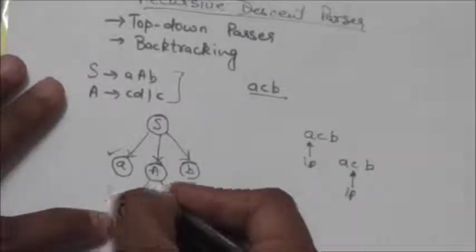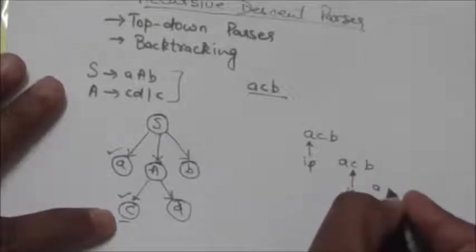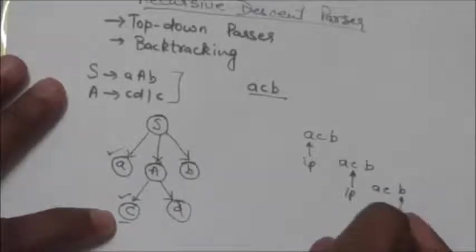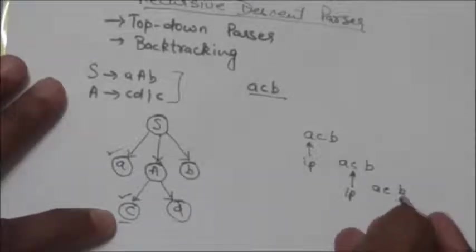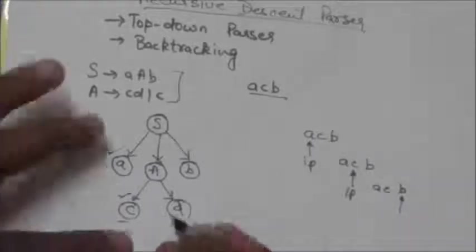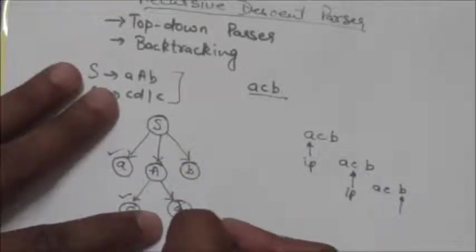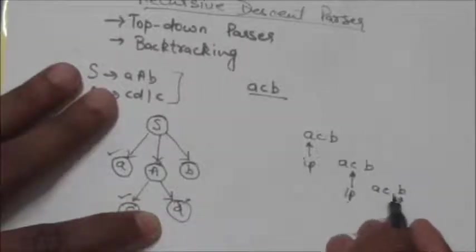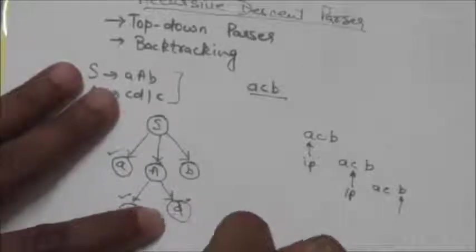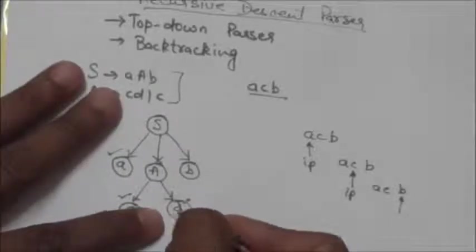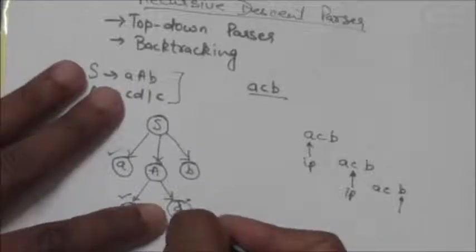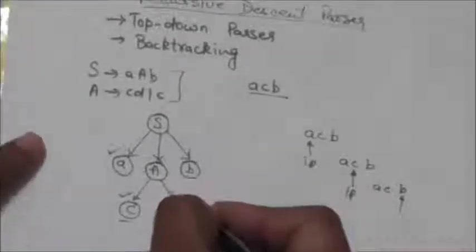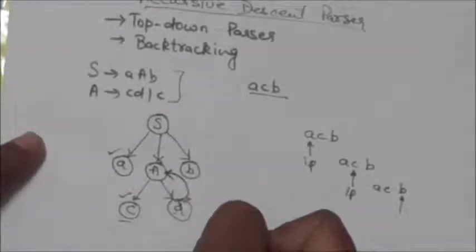The leaf 'c' matches the terminal pointed to by the input pointer, so the input pointer moves one position right and now points to terminal 'b'. The next leaf in the tree is 'd'. It doesn't match terminal 'b' — and since 'd' is a terminal symbol, we cannot expand it. So we backtrack to the parent node A.